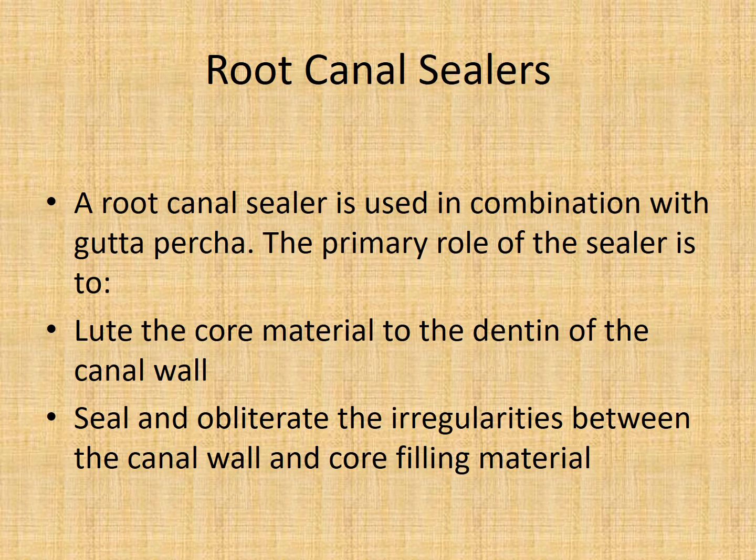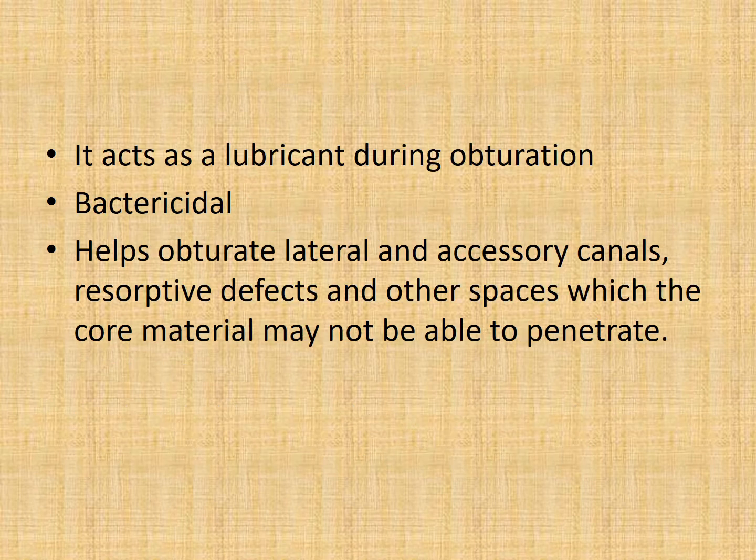Now coming to the second component of root canal obturation — root canal sealers. The first component we already discussed is the core material, which is gutta-percha. A root canal sealer is used in combination with gutta-percha. The primary role of the sealer is to bond the core material to the dentine of the canal wall and seal and obliterate the irregularities between the canal wall and the coronal core filling material. It acts as a lubricant during obturation, should be bactericidal, and should help obturate lateral as well as accessory canals, resorptive defects, and other spaces which the core material may not be able to penetrate.